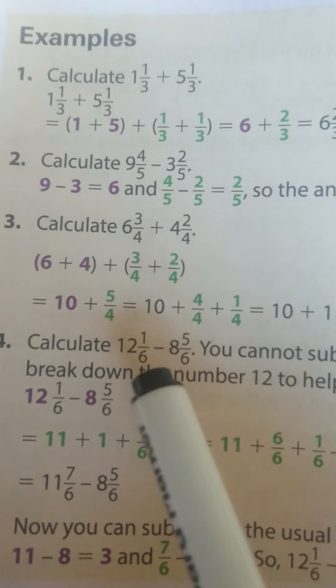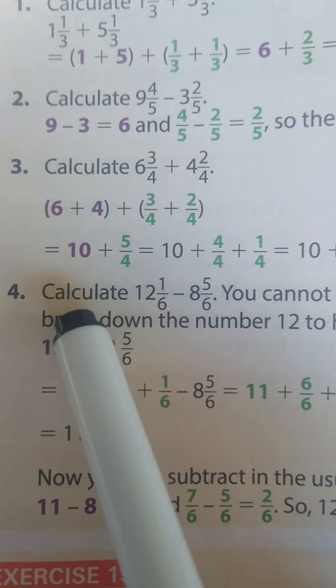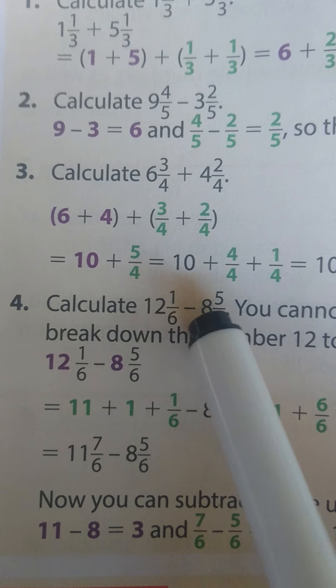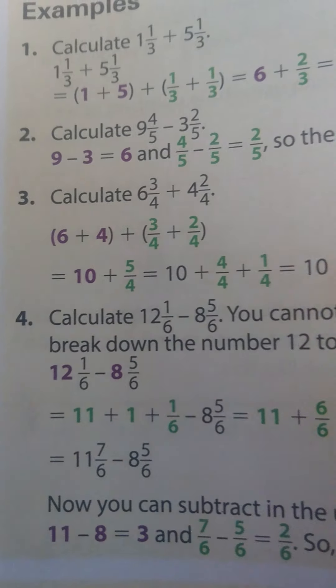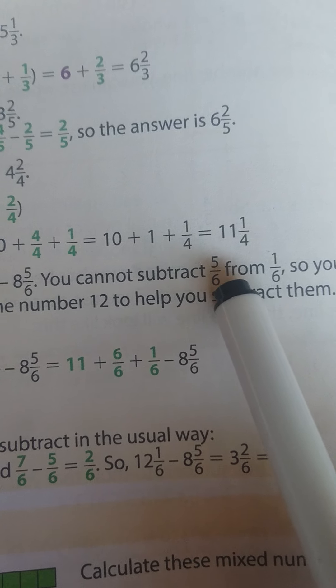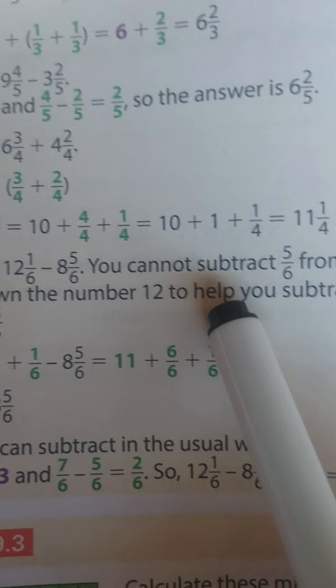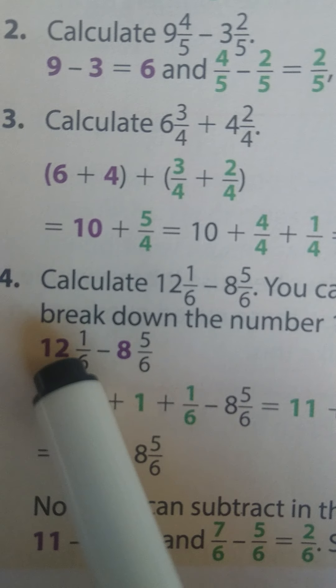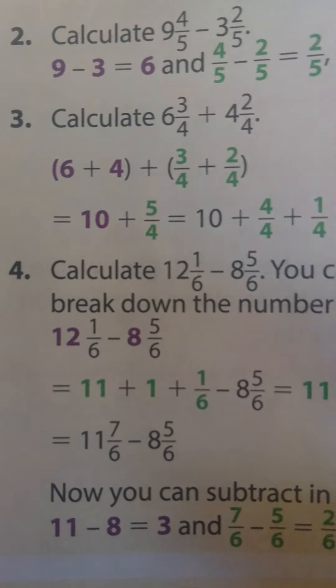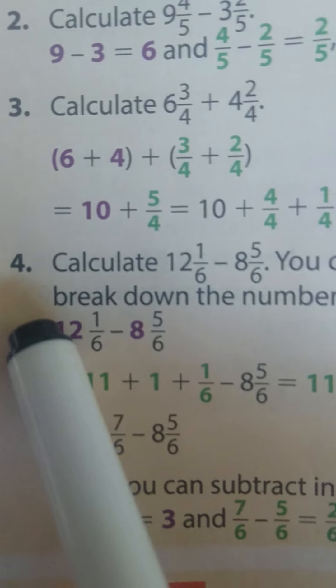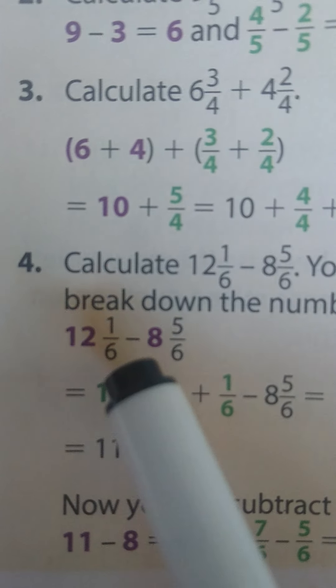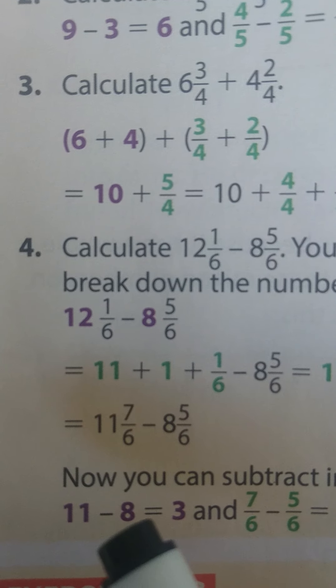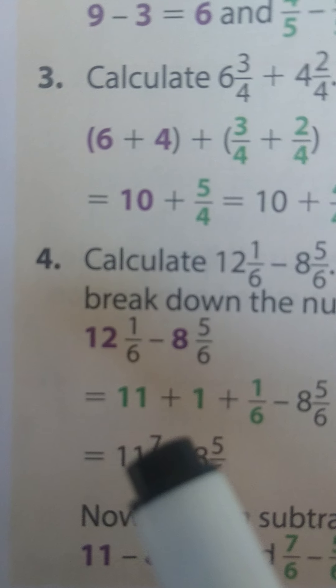Moving on to the next example. Calculate 12⅙ - 8⅚. You cannot subtract ⅚ from ⅙. So you should break down the number 12 to help you subtract them. So I'm going to show you how to do this. Now if it were a normal sum, you will say 12 - 8 and ⅙ - ⅚. But ⅙ cannot minus ⅚. So let me show you what to do.